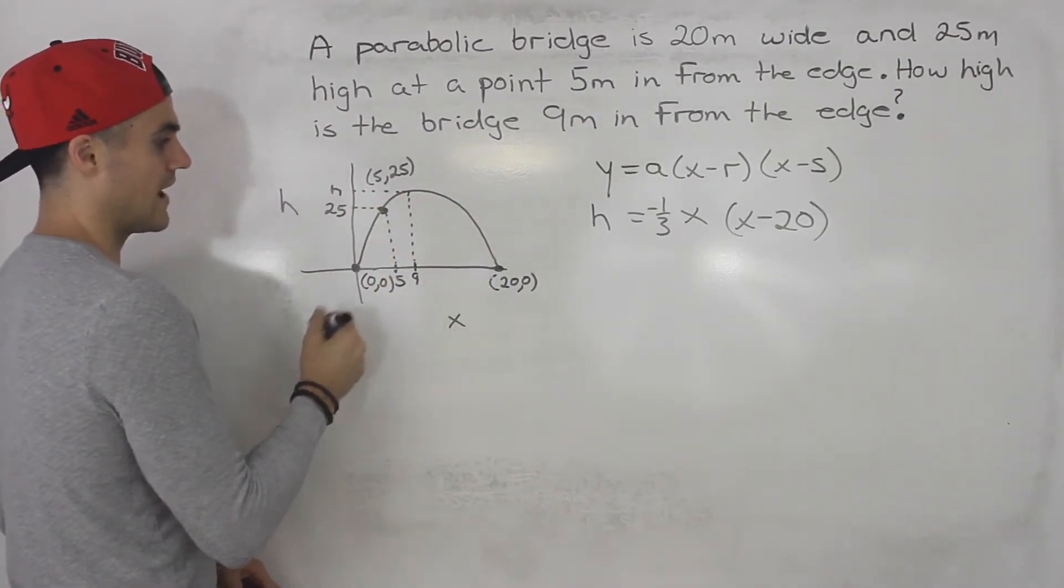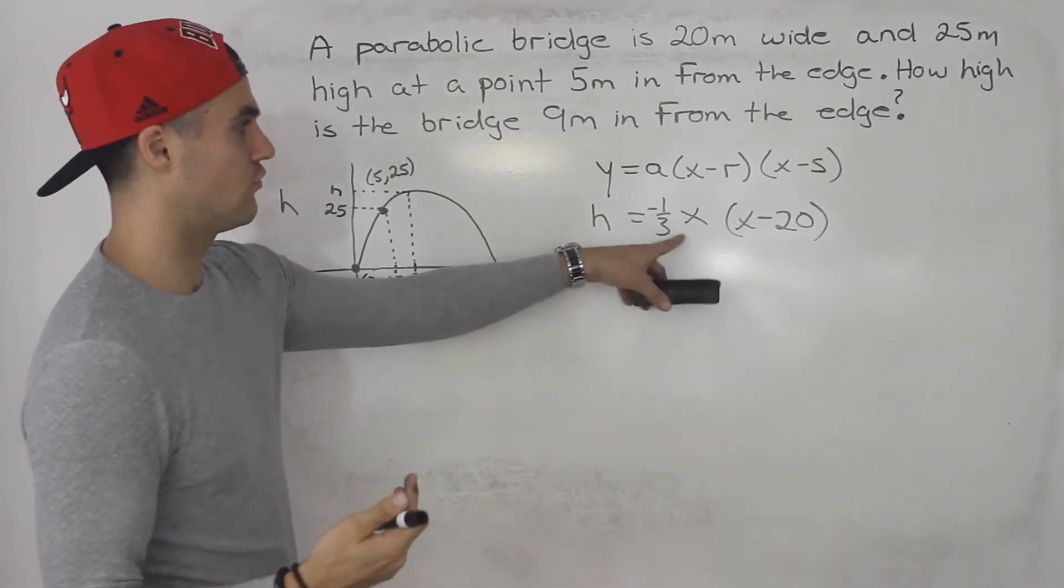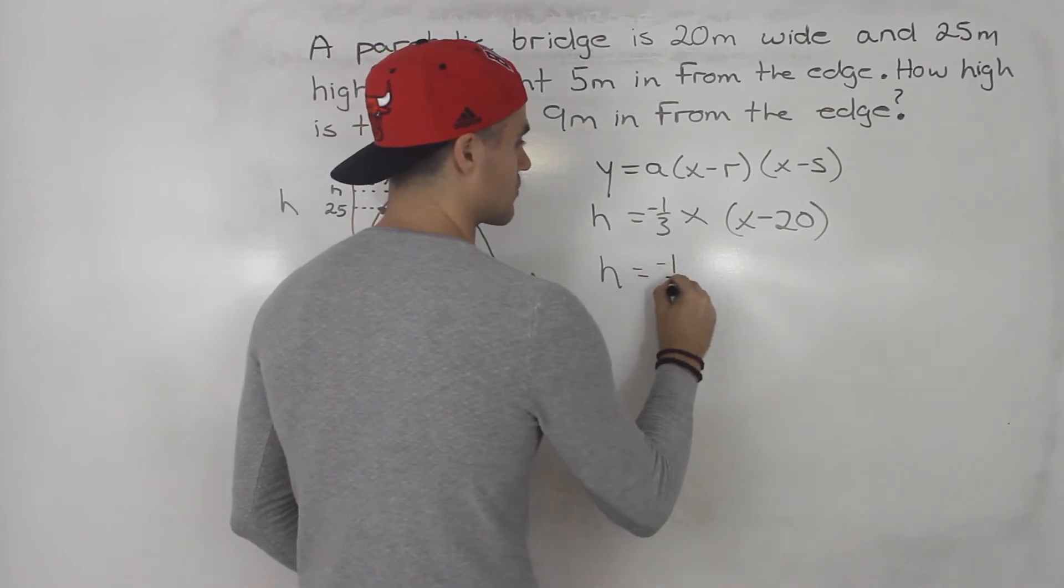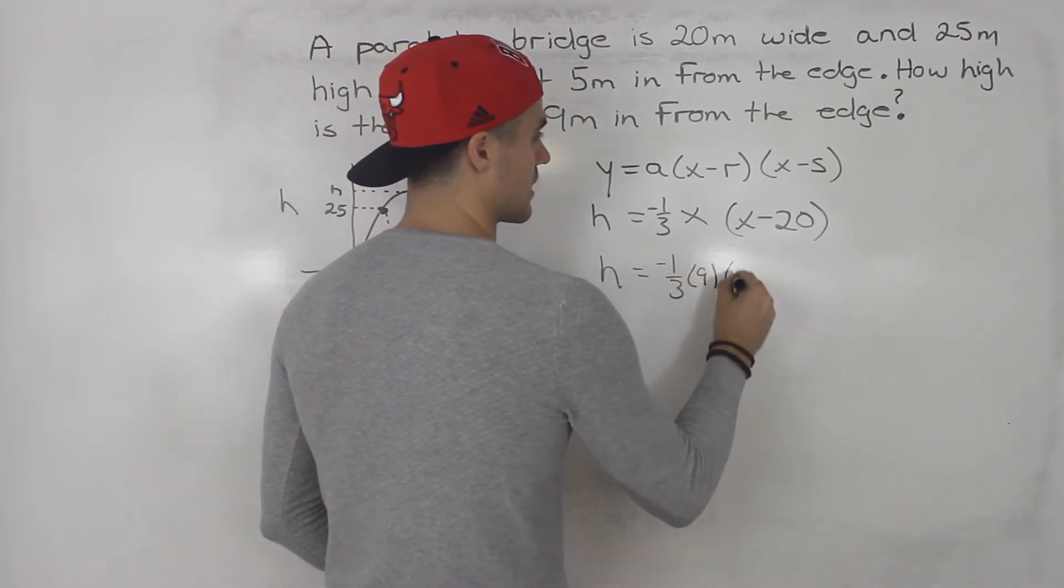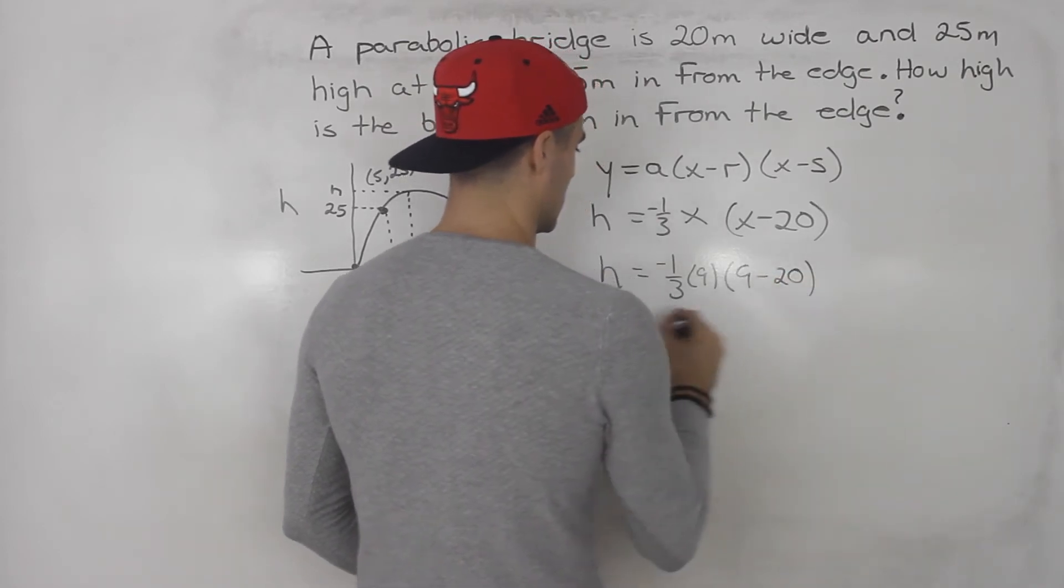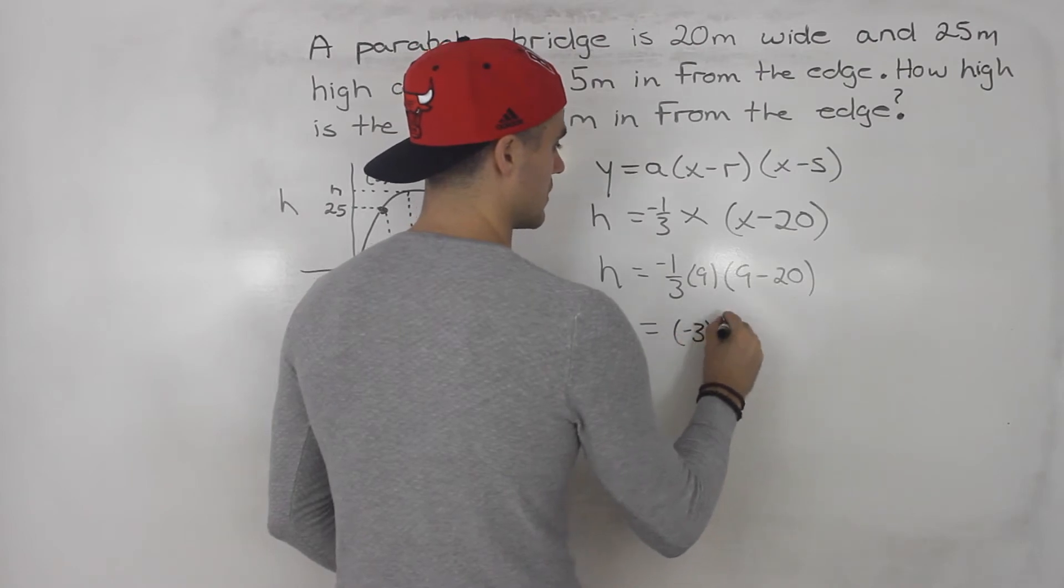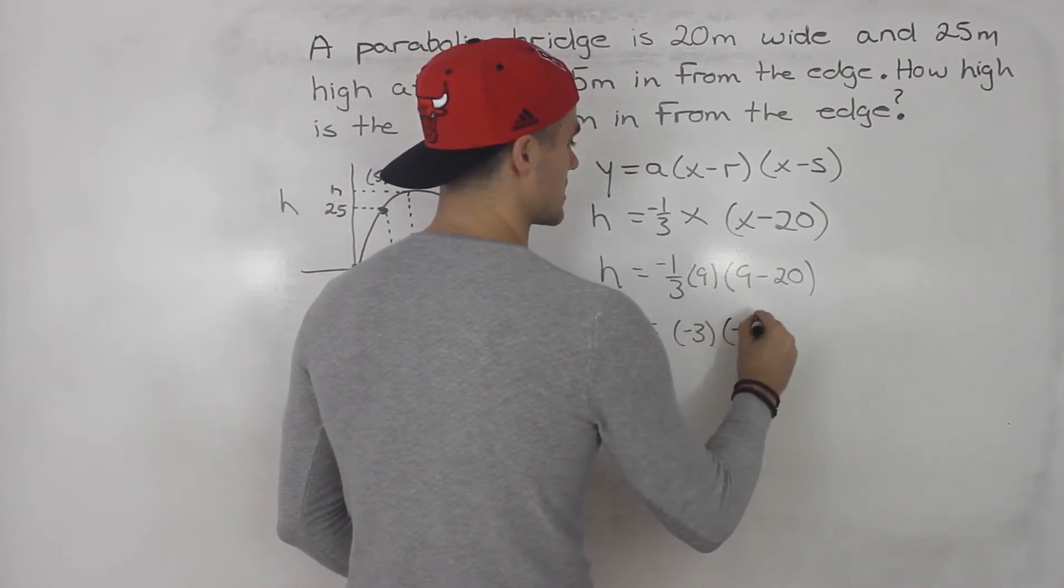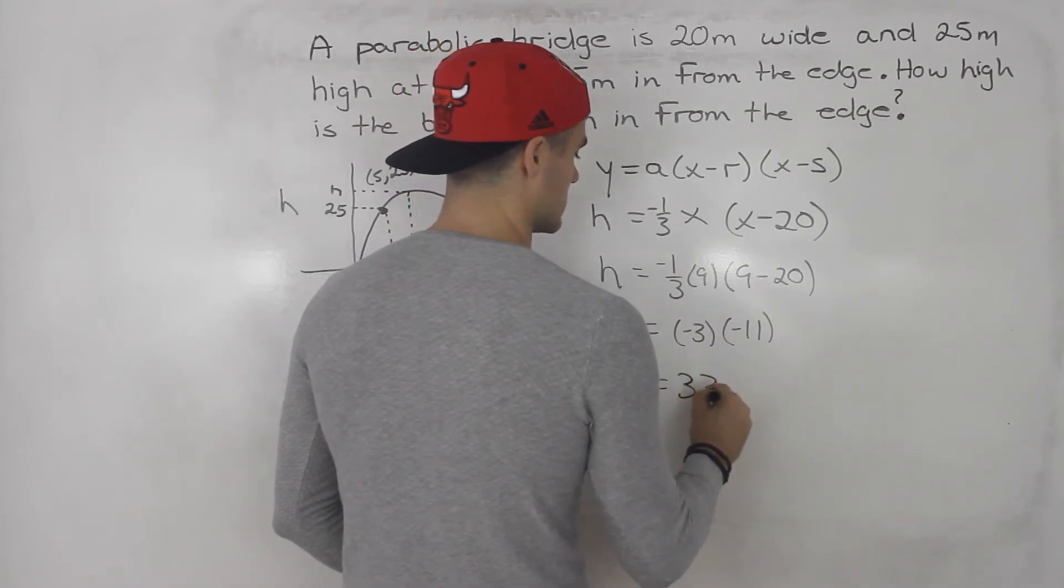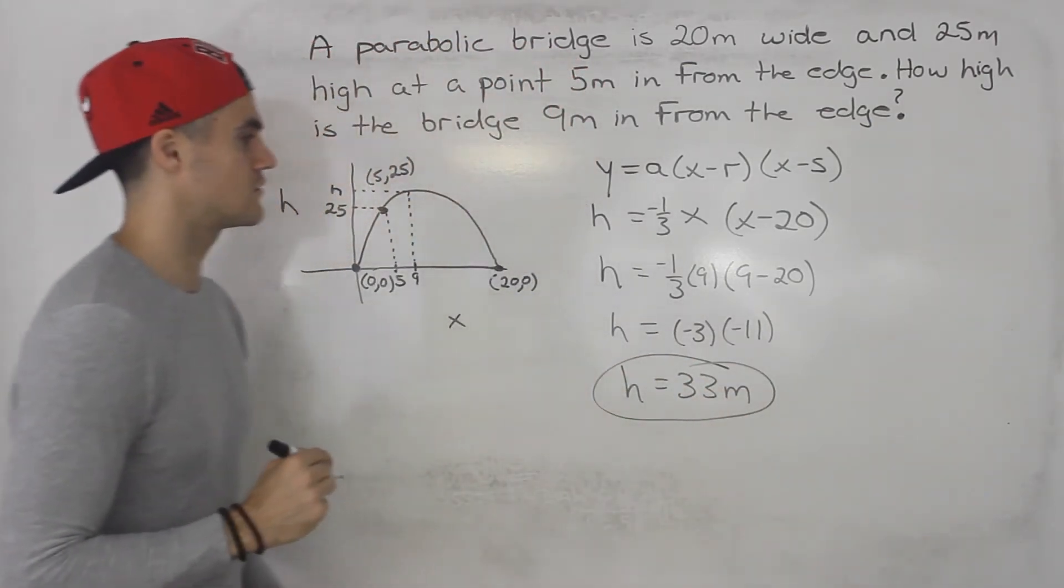And what do we want? We want the height 9 meters in from the edge. So we could just plug in 9 for x. So we'd have h equals negative 1 over 3 times 9 times 9 minus 20. So this would be negative 1 over 3 times 9 gives us negative 3. And then 9 minus 20 gives us negative 11. So the height is 33 meters. That's your final answer.